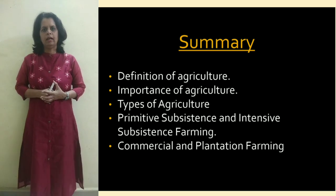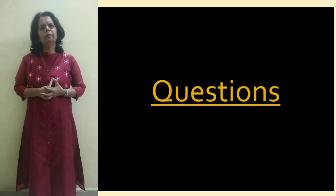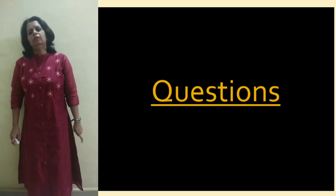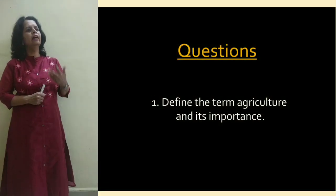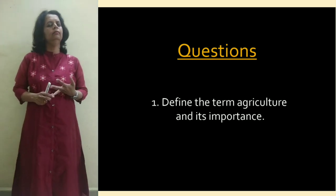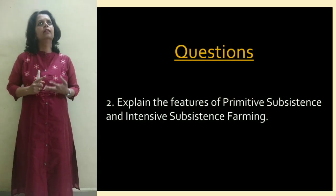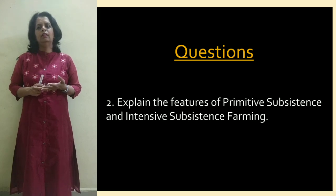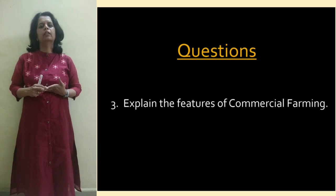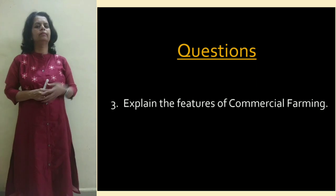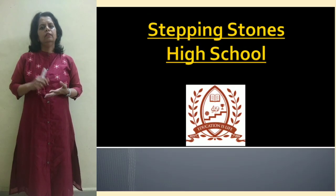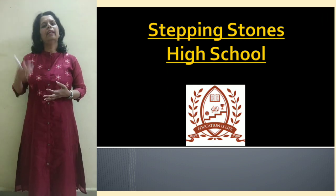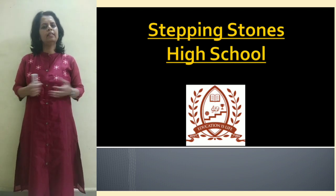Till here only, we will discuss today. Now let's take out your notebook and write down some questions relating to the topics we have discussed. Question number one: define the term agriculture. Question number two: explain the features of primitive subsistence and intensive subsistence farming. Question number three: explain the features of commercial farming. So these three questions you need to do. See you in the next lecture. Kindly do your homework. Stay safe and stay healthy. Thank you.